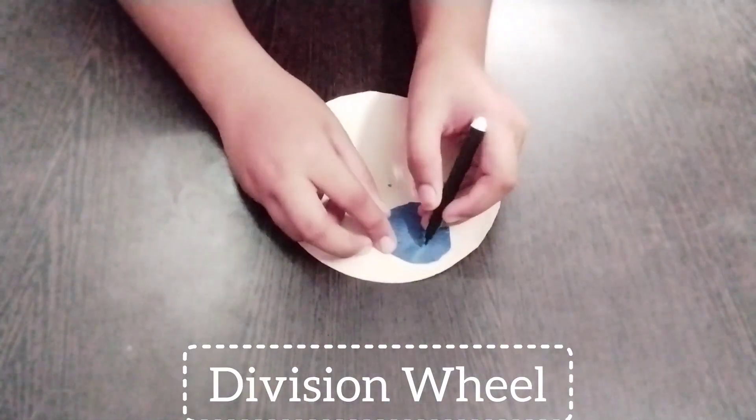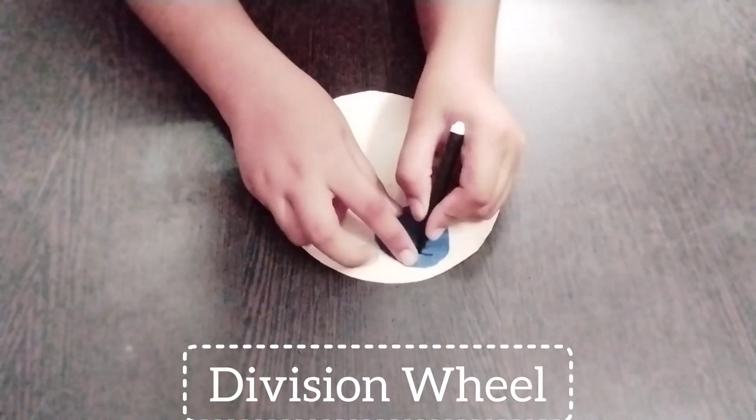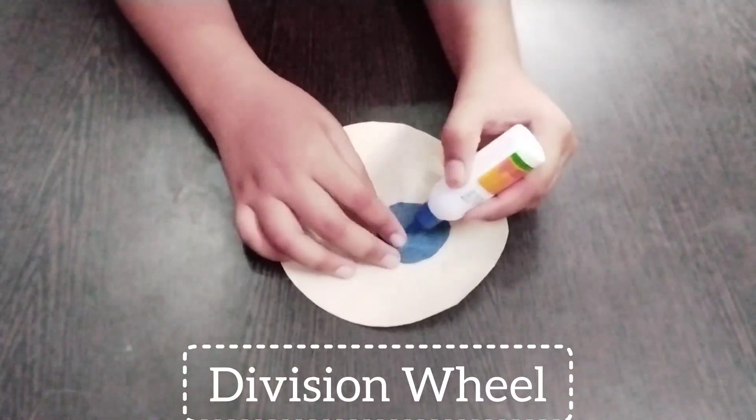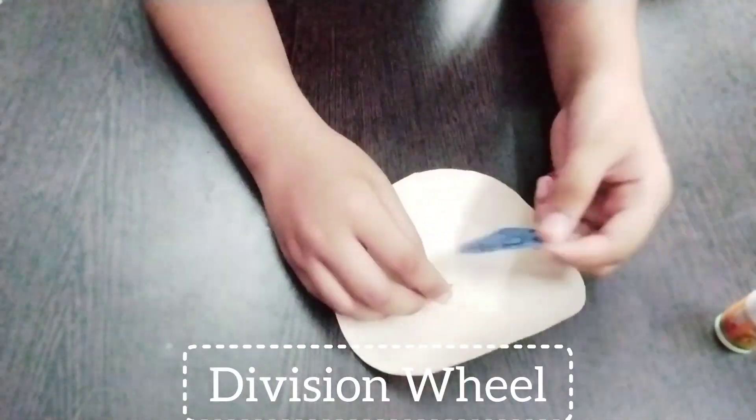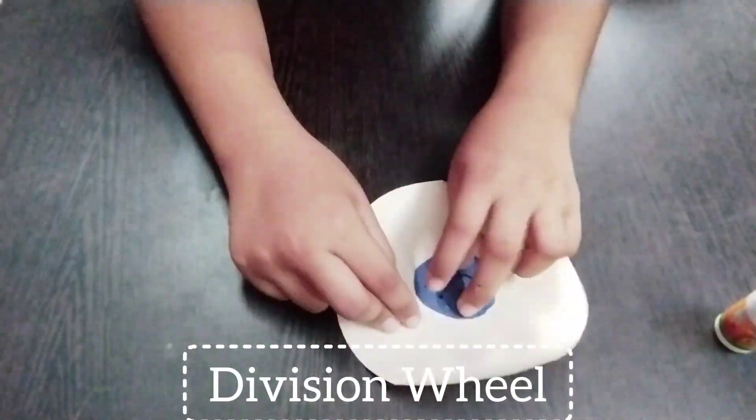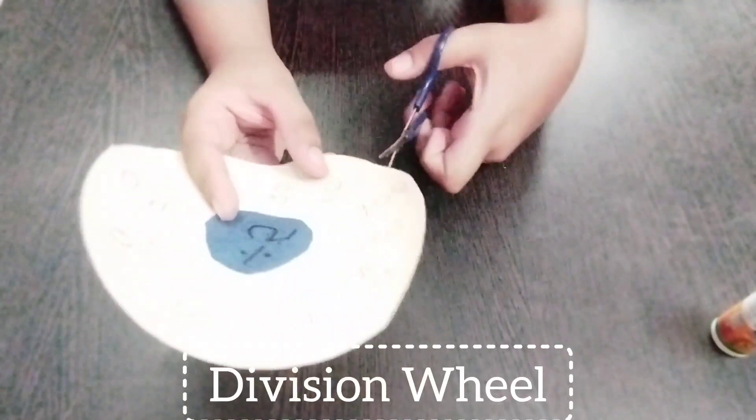Write the number 5 on the division symbol. Place this division circle in the center of the white circle. Divide the white circle into equal parts.